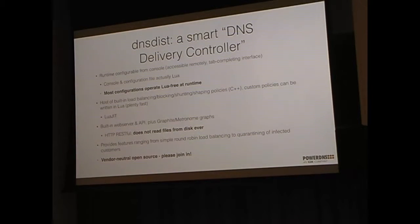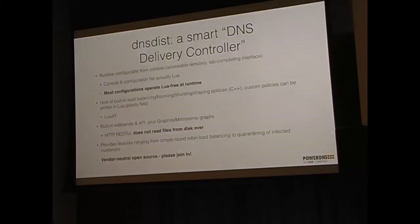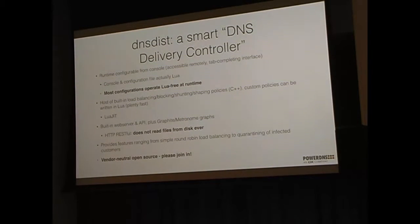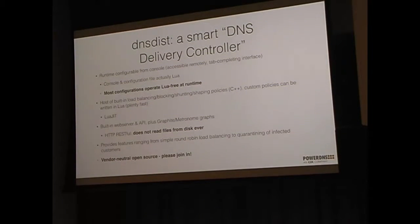We had customers under smart denial of service attacks — not 10 gigabits of packets, but just a few megabits of the wrong kind of queries that take down the name server. So we thought: let's build a console where you can log in and live-query the traffic as it comes by and get statistics, because otherwise you spend your time doing tcpdump, grep, sort, uniq — which takes a long time. We like the Lua language — it's great, we use it in PowerDNS all over the place. So our console where you log in and type to DNS dist is Lua, and the configuration file is also Lua.